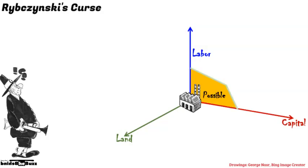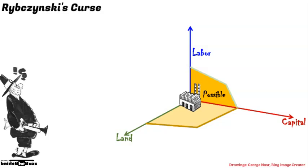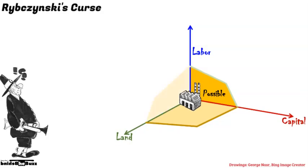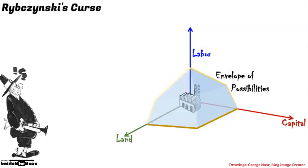It shows that an economy is never in a steady state. An economy is a dynamic balancing of labor, land, and capital. So, there is never really too much of a good thing. There is too much of a good thing happening too fast.